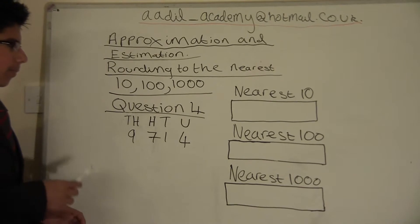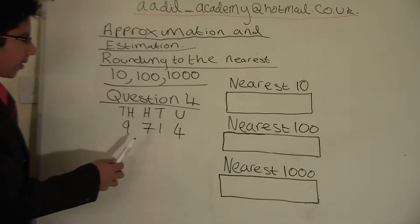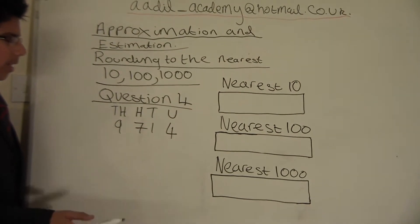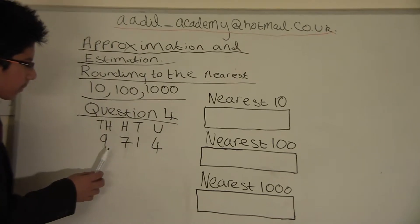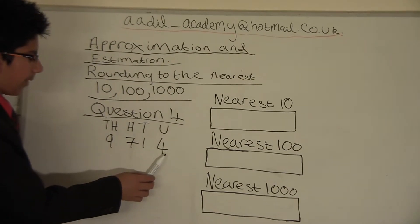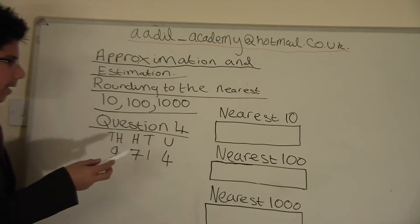As I've told you in my previous videos, the procedure of getting the nearest 10, 100, and 1000 - we will follow the same procedure. So we will round down here to get the nearest 10.